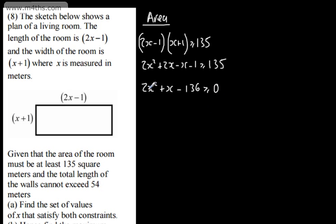I need to factor this. This is looking quite tough. 2 times 136 is 272. 272 is 16 times 17, so I can factor this. I'm going to have 2x plus 17, and then I'll have x minus 8. So 2x squared, then minus 16x plus 17x, so plus 1x, and then minus 136.